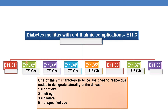Wherever the 7th character is mentioned — CH means character — those codes require a 7th character. One of the 7th characters is to be assigned to designate the laterality of the disease. The 7th character 1 indicates right eye, 7th character 2 indicates left eye, 7th character 3 indicates bilateral, and 7th character 9 indicates unspecified.